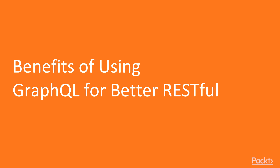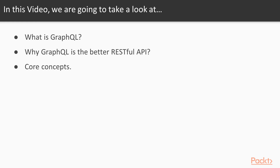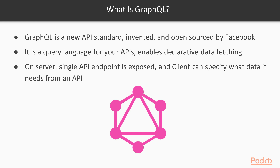Benefits of using GraphQL for Better RESTful. In this video, we are going to take a look at what is GraphQL, why GraphQL is better than RESTful API, and we'll cover core concepts. GraphQL is a new API standard invented and open sourced by Facebook. It was being used by Facebook internally in the year 2012, and they made the project open source in the year 2015.